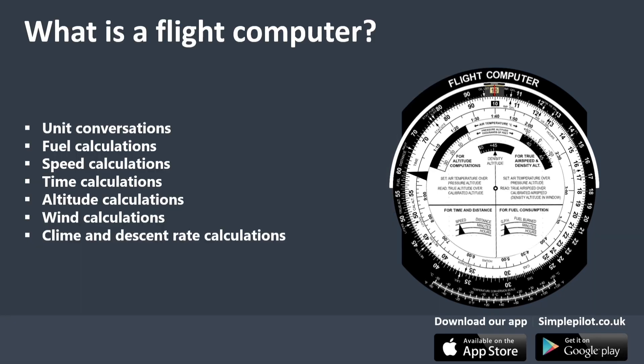Here we can see the flight computer. Let's discuss exactly what a flight computer is. A flight computer is a device designed to perform calculations that are useful for navigation. In this video, we will only focus on the E6B flight computer, which is one of the most popular models in the market. There are different types: manual or physical flight computers, electronic computers, and mobile-based flight computers. In this video, we will discuss how to use the mobile-based flight computer, which is an app that can be downloaded from the Play Store.